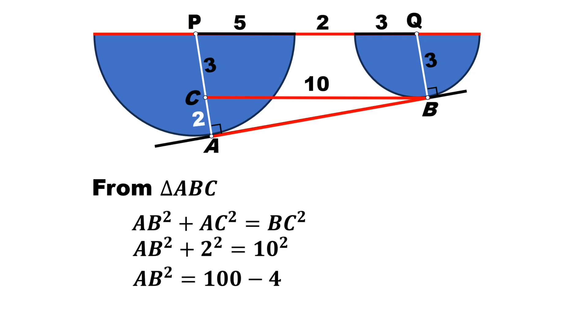Simplifying, AB² will be equal to 96. And if we take square root on both sides, AB length will be equal to 4√6. That is the answer.